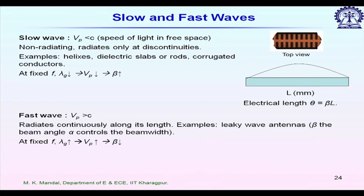The next term is slow wave and fast wave. We define slow wave when the phase velocity v_p is less than c, the speed of light in free space. At a fixed frequency, for a slow wave, lambda g should be smaller than lambda naught, so v_p decreases and beta increases. An important quantity is the ratio beta divided by k naught, where k naught is two pi divided by lambda naught in free space and beta is two pi divided by lambda g.